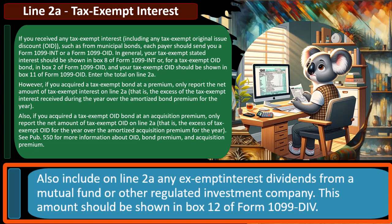Also include on line 2A any exempt interest dividends from a mutual fund or other regulated investment company. This amount should be shown in box 12 of Form 1099-DIV. This can be a little confusing because you might think: why isn't it on a 1099-INT? If you're investing money, you're typically investing in stocks and bonds, possibly in a mutual fund that has a mix of stocks and bonds within it. If you're investing in bonds or putting money in a savings account or CD, you're generating revenue in the form of interest.